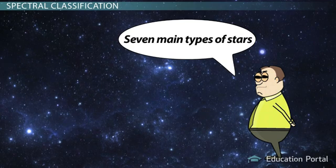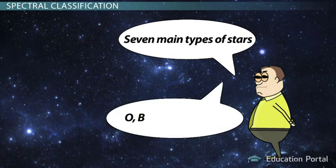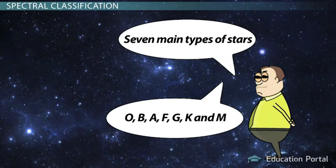There are seven main types of stars: O, B, A, F, G, K, and M.